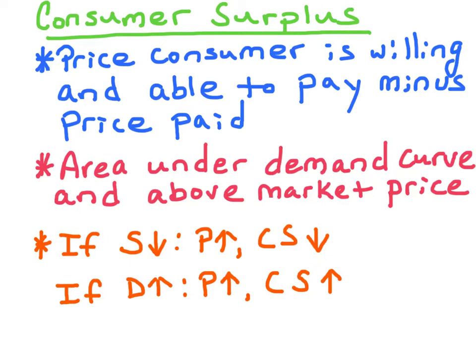If there's an increase in consumer taste and preferences for a good, demand would shift to the right, the market price would increase, and the new area of consumer surplus would go up.